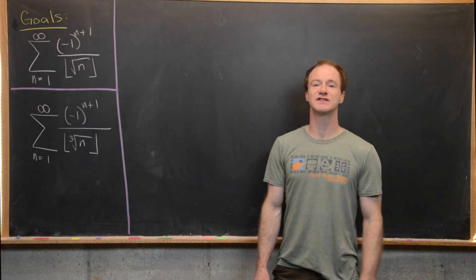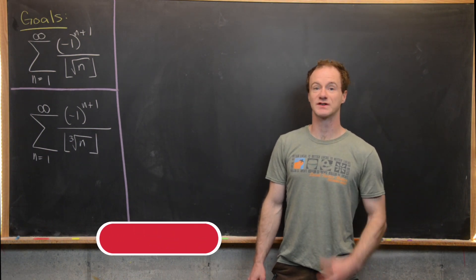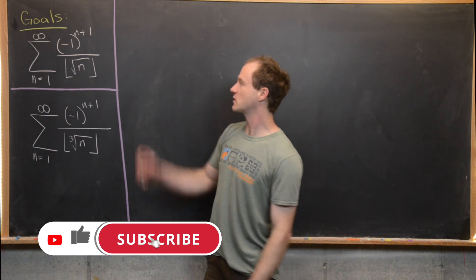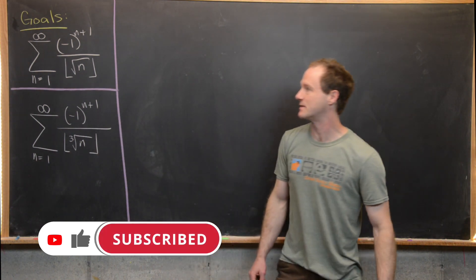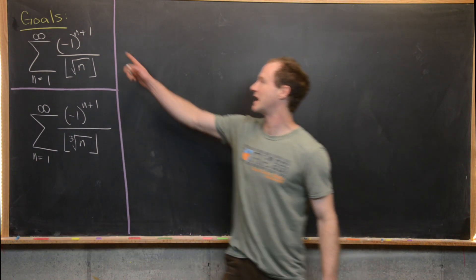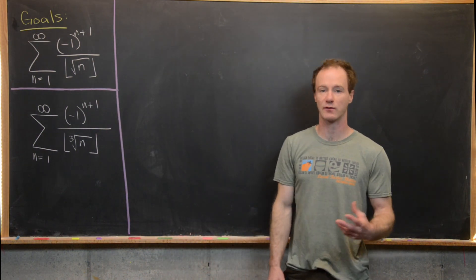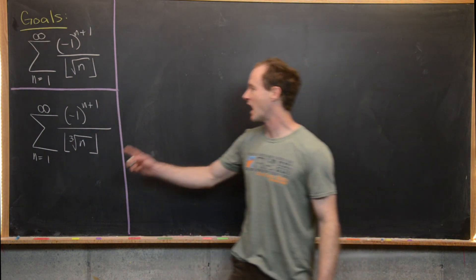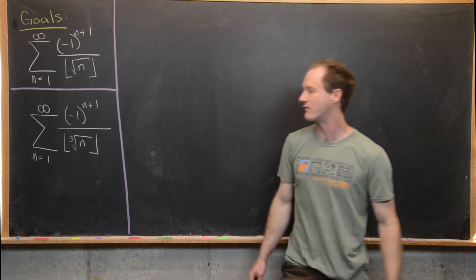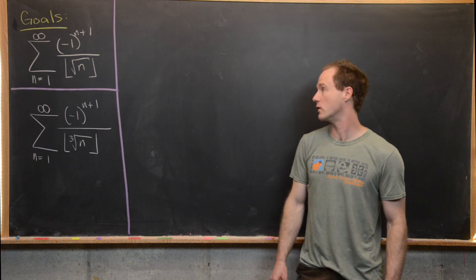Here we want to look at two interesting alternating sums that involve reciprocals and the floor function. The first one will be the sum as n goes from 1 to infinity of minus 1 to the n plus 1 over the floor of the square root of n. The next one will be essentially the same thing, but now we have the floor of the cube root of n.